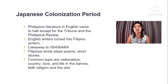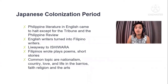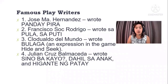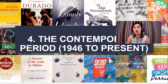The benefit of the Japanese period was that Filipinos tried to write their own literature using our lingua franca, the Filipino language. Publications like Liwayway and Ishiwara featured Filipino road plays, poems, and short stories. Common topics were nationalism, love of country, life in the barrios, faith, religion, and the arts. Literary forms that emerged during the Japanese period include the haiku and tanaga for poetry, Filipino drama, Filipino short stories, and Filipino literature in English. Famous writers include Hernandez, Rodrigo, del Mundo, and Balmaceda.